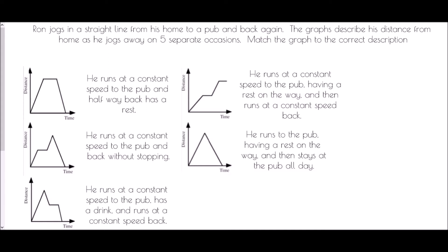The key here is we need to identify some key features of these graphs. If we have a look at the first graph, we have this diagonal line. Now that line is straight. A straight line means constant speed. So a line like this means that we are travelling at a constant speed. The reason for that is speed is distance divided by time, and so all the way along this line, it is the same.